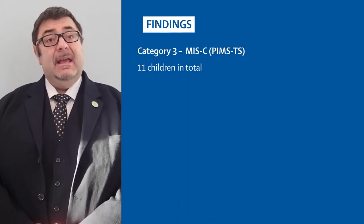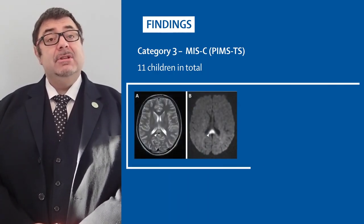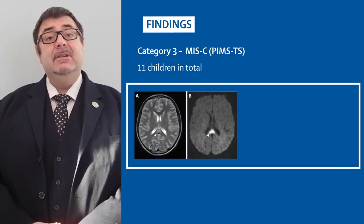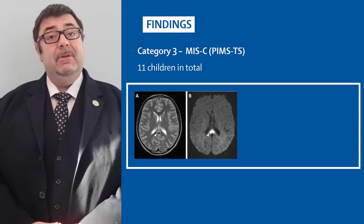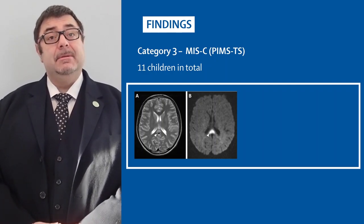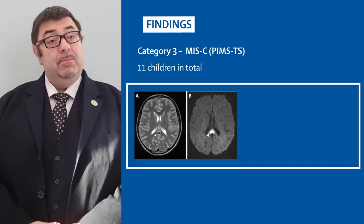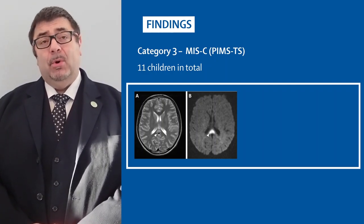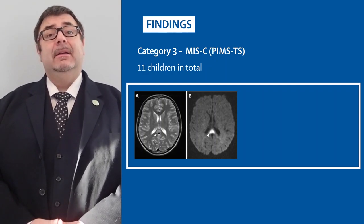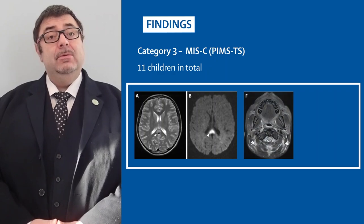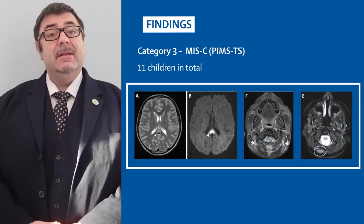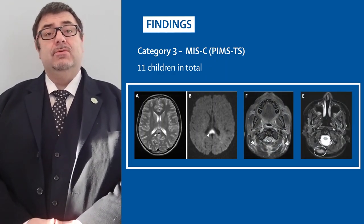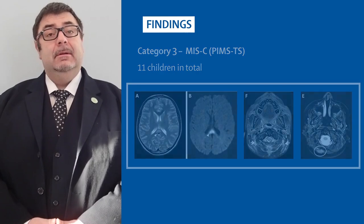Children with multisystem inflammatory syndrome exhibited ADEM-like changes and high T2 FLAIR signal lesions in the splenium of their corpus callosum, and a previously unreported finding of diffuse or focal myositis. All of these children did well.